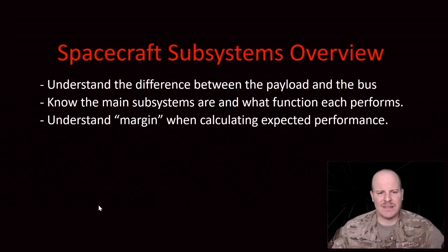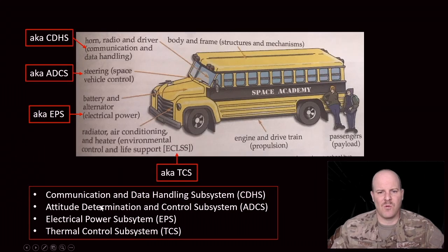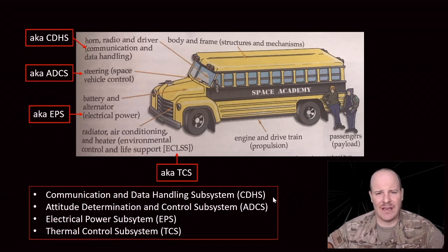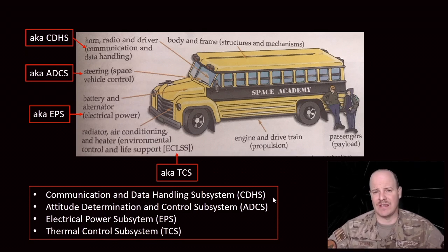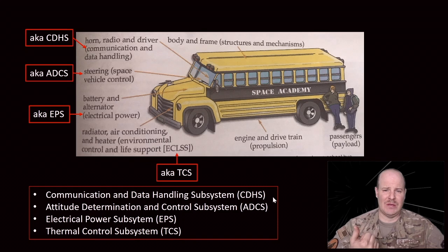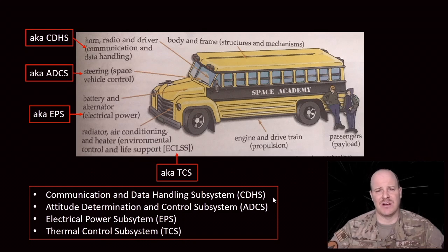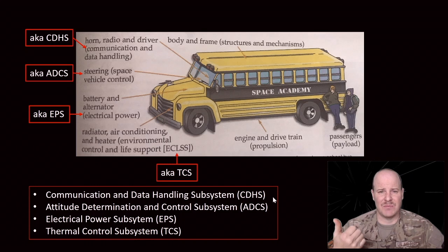So to begin with, what is our spacecraft? You can think of our spacecraft as really a collection of different subsystems. In general, we have two categories: we either have the payload or the bus. Most of the subsystems are going to be part of the bus, and basically just the payload is part of the payload.